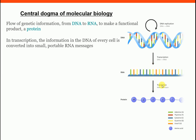Another part of the central dogma is translation. In translation, the information from messenger RNA is converted into a functional product — a protein. So RNA to protein is called translation. To remember the order: transcription starts with 'C' and comes first; translation starts with 'L' and comes after.